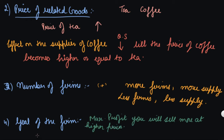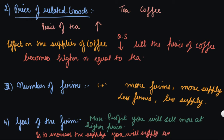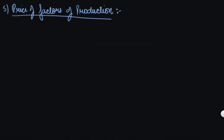If your goal is to increase supply to gain a greater market share, improve goodwill, and expand production in the market, you will supply even at the same price. So the goal of the firm also affects the quantity supplied.